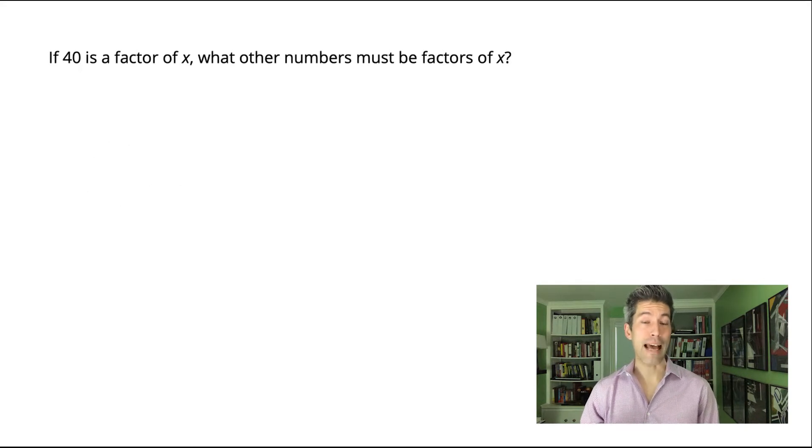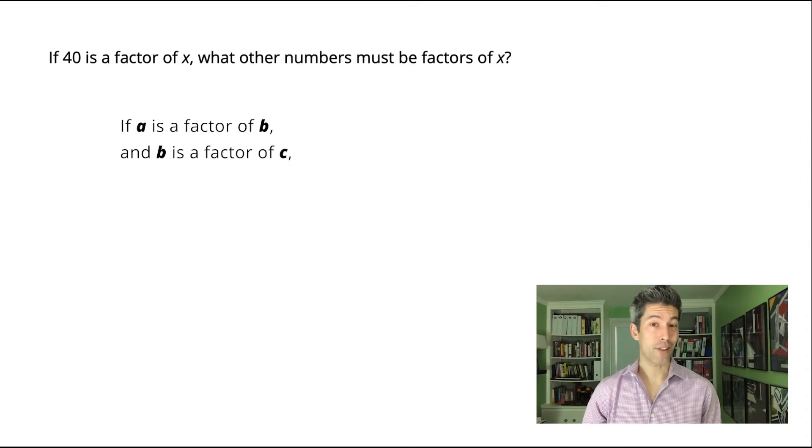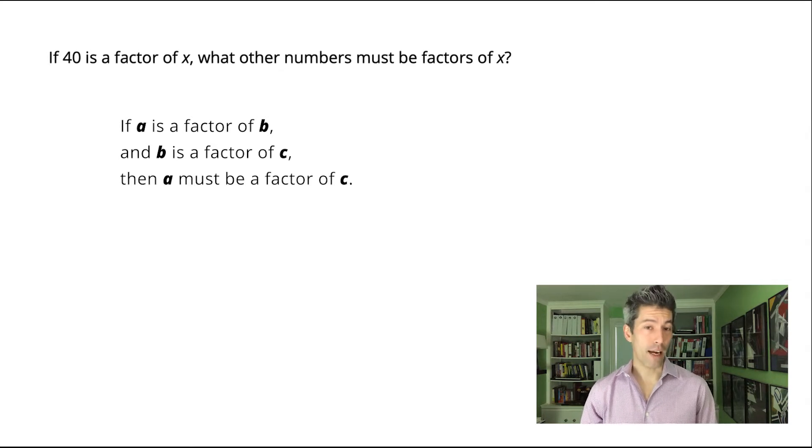So we have to know what a factor is and then we need to know how factors combine. That's going to be the essential skill on this problem. Here's the rule: If A is a factor of B and B is a factor of C, then A must be a factor of C.